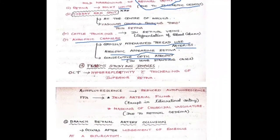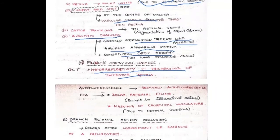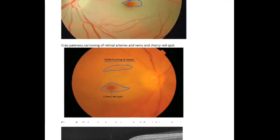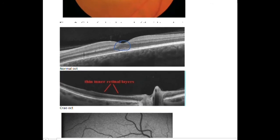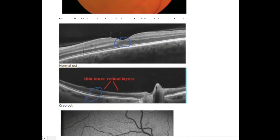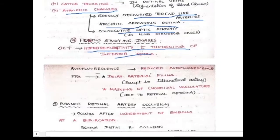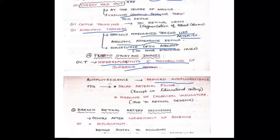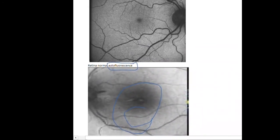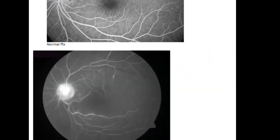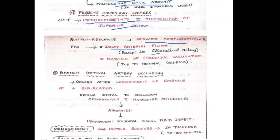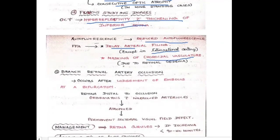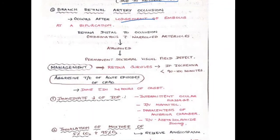On OCT, there is hyperreflectivity with thickening of the inner retina. In the normal OCT, all retinal layers at the macula are visible; in central retinal artery occlusion, the inner retinal layers are thinned out. On autofluorescence, there is reduced autofluorescence. On FFA (fundus fluorescein angiography), the vessels appear thinned, with delayed arterial filling and masking of choroidal vasculature due to retinal edema.